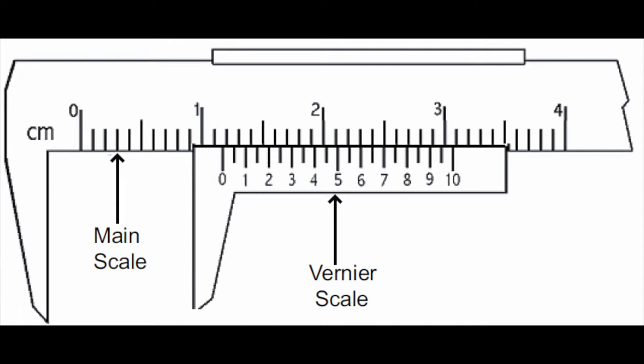The top is the main scale, just like those you'd find on a regular meter stick or protractor. The bottom scale, called the vernier scale, slides freely along the fixed main scale.